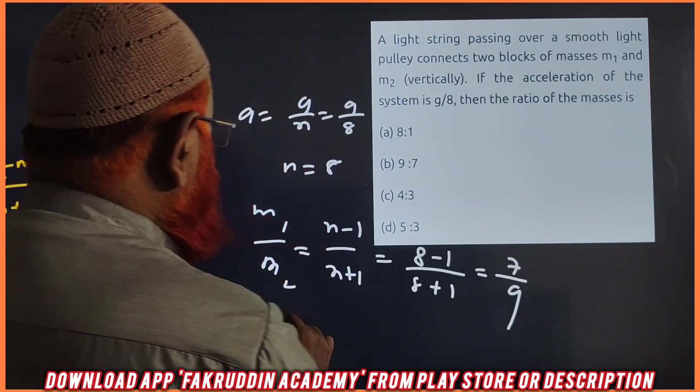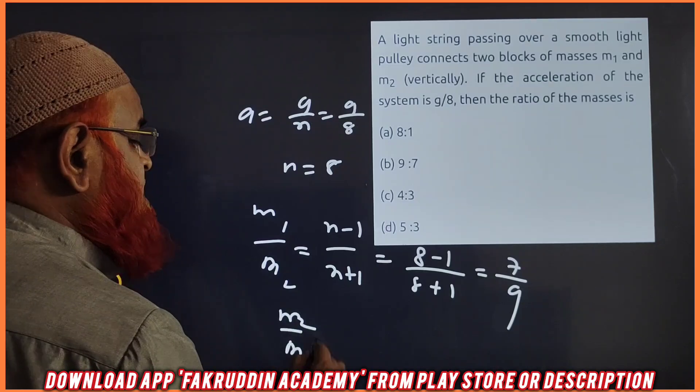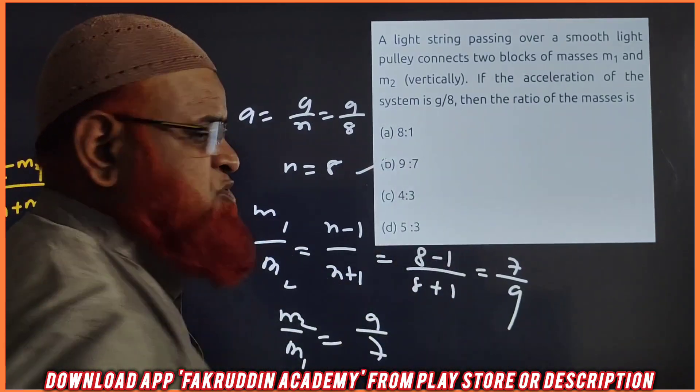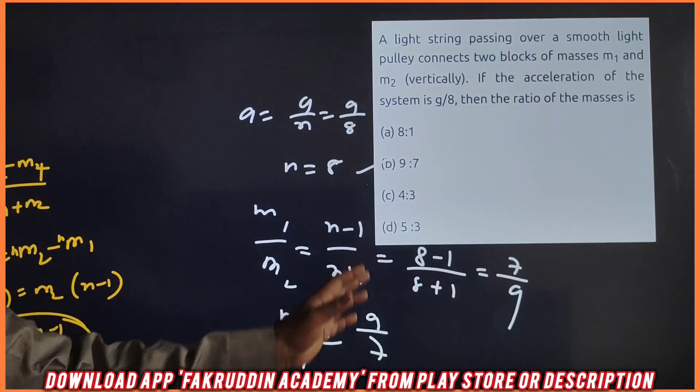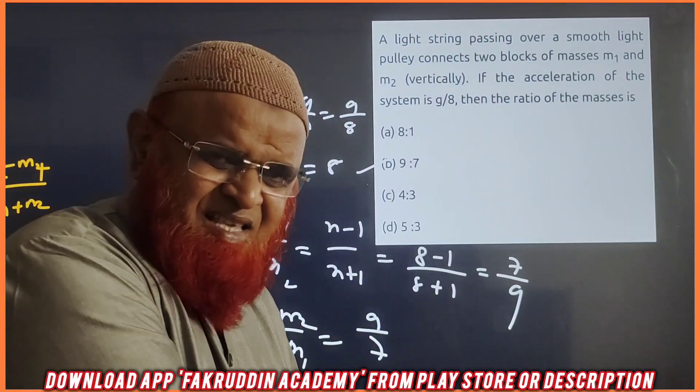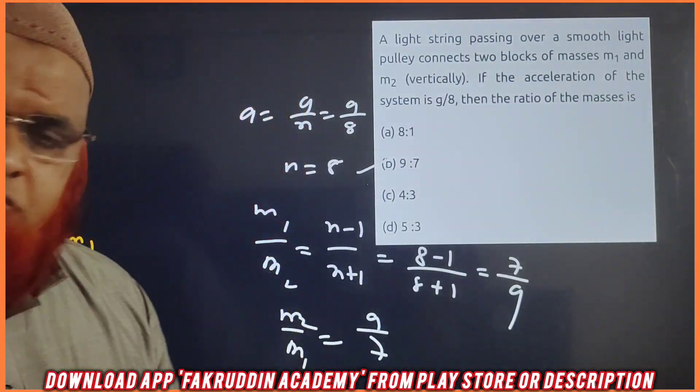If you ask to find out the ratio M2 by M1, it is 9 by 7. B is going to be an option. Hope you have enjoyed this shortcut. And now, you can see the long method also. Thank you.